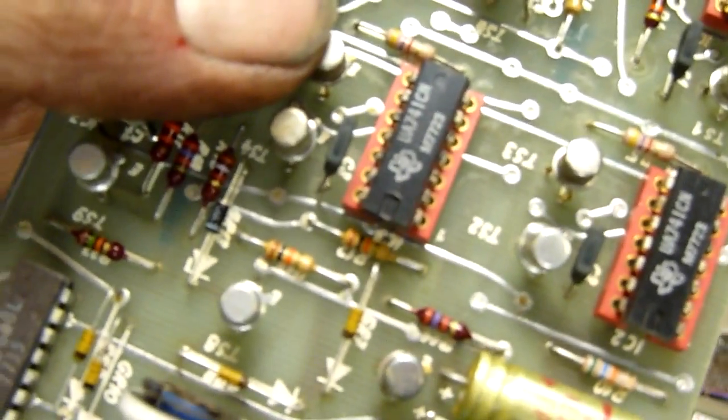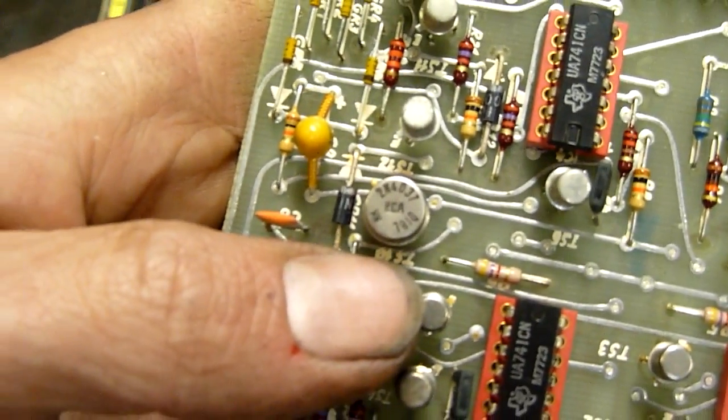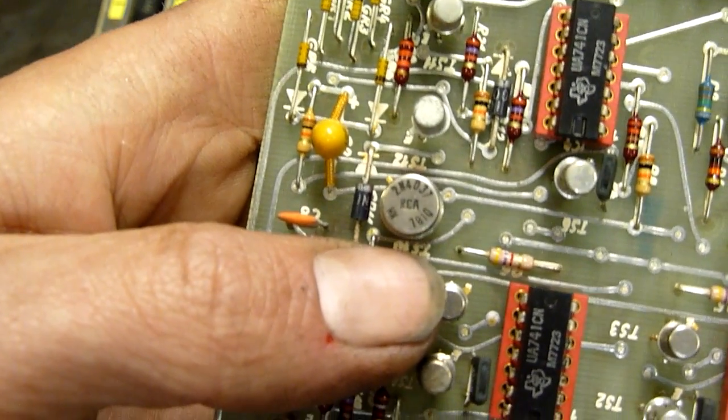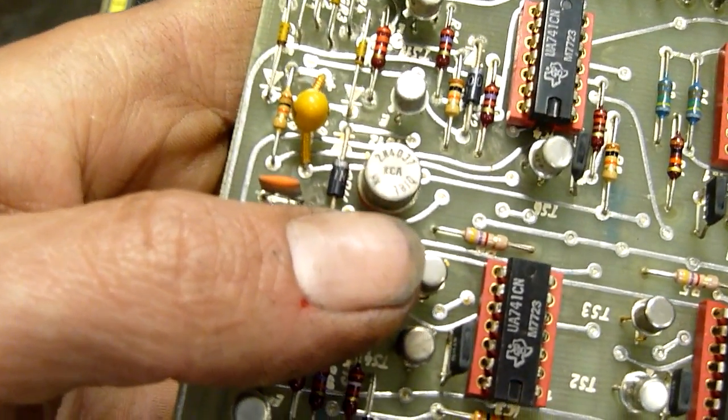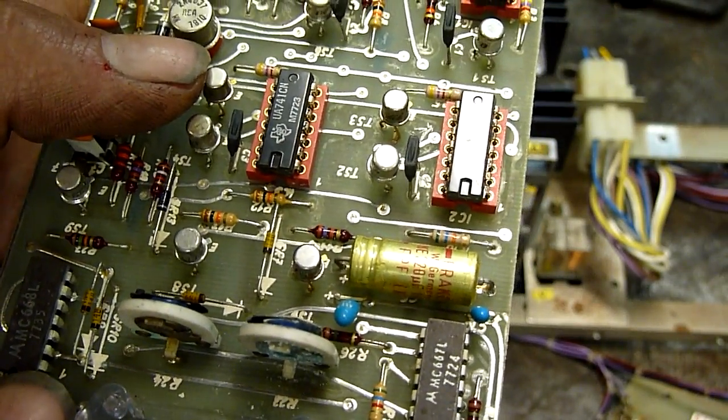That one there, whatever that is, is fairly big. It's made by RCA. Is it 2N4037?